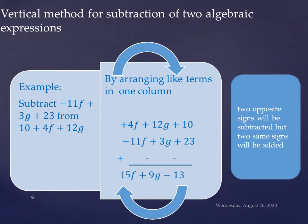Now we will change the sign of second expression of each term. Minus 11f change into plus, plus 3g change into minus, and plus 23 is change into minus. Now we will consider the new sign only. Now in the first column, plus 4 and plus 11 become plus 15. Two same signs will be added. 4 plus 11 is 15f.